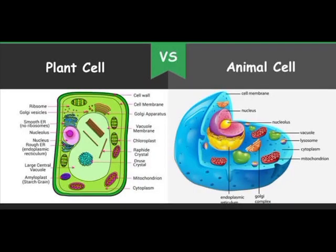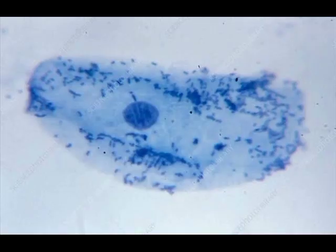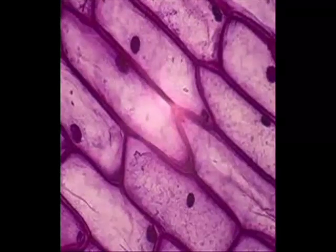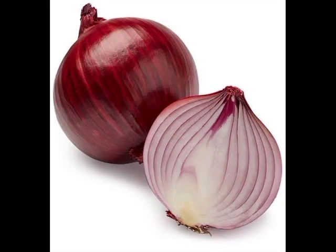To understand the difference between plant cell and animal cell, we have to observe some different cells. Let us go one by one. First, I would like to explain an activity that is identification of plant cells.